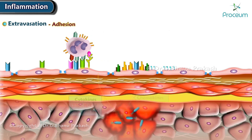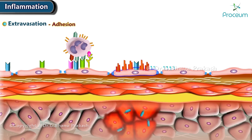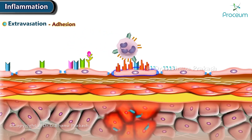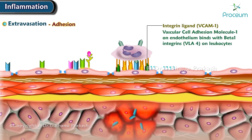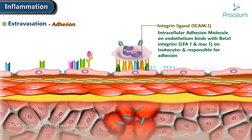At the same time, other cytokines, notably TNF and IL-1, activate endothelial cells to increase their expression of ligands for integrins. VCAM, short for vascular cell adhesion molecule 1, on endothelium, binds with the beta-1 integrins VLA-4 on leukocytes. ICAM-1, short for intracellular adhesion molecule 1, binds with the beta-2 integrins LFA-1 and MAC-1 on leukocytes, and is responsible for adhesion.